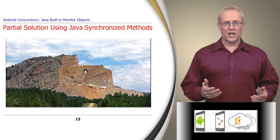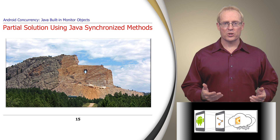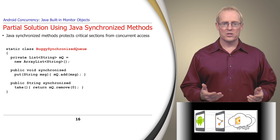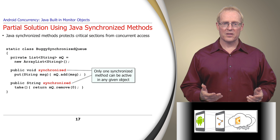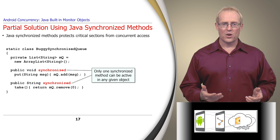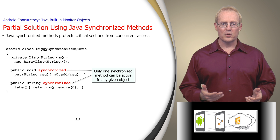Before showing the complete Java built-in monitor object solution, we outline a partial solution to the race condition problems with the original buggy queue. This solution, called buggy synchronized queue, uses Java synchronized methods to specify sections of code in an object that can't be accessed concurrently by multiple threads. In particular, we'll add the Java synchronized keyword to the buggy queue's put and take methods, which has two effects.